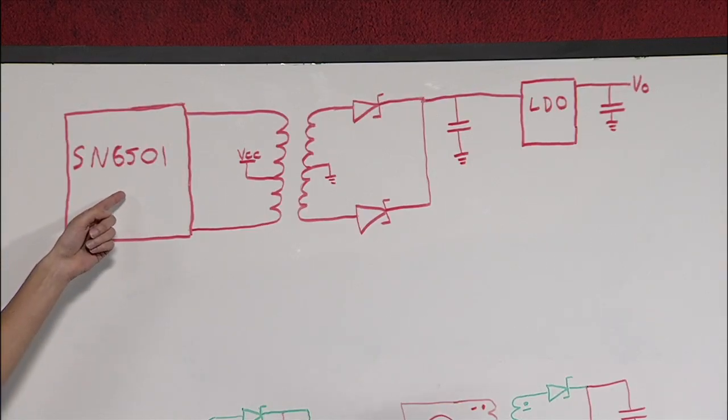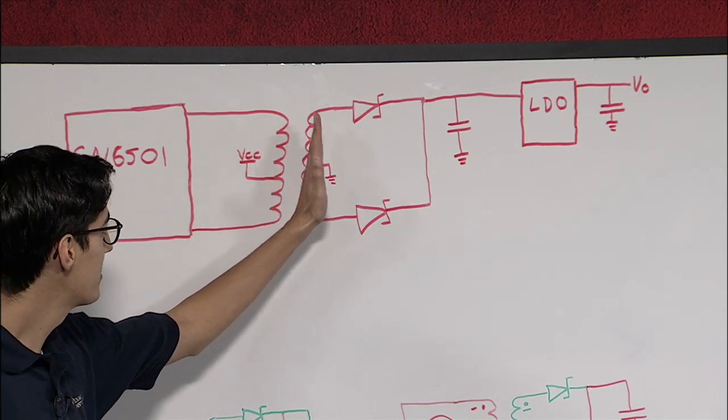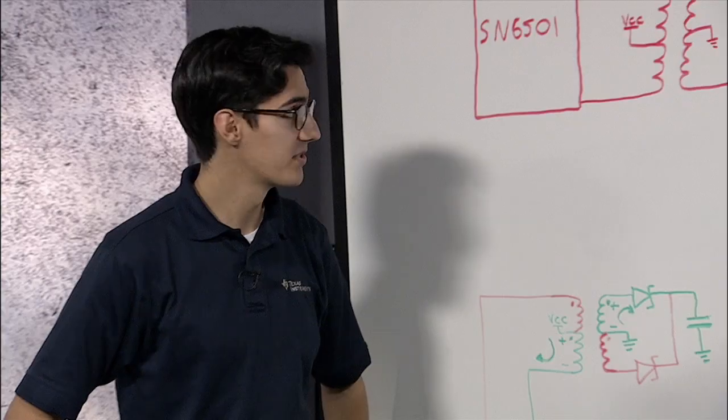The driver, such as the SN6501, will drive a transformer, which is the isolation element in the system. This allows voltage to transfer from one side of the barrier to the other with no electrons flowing between the two sides.